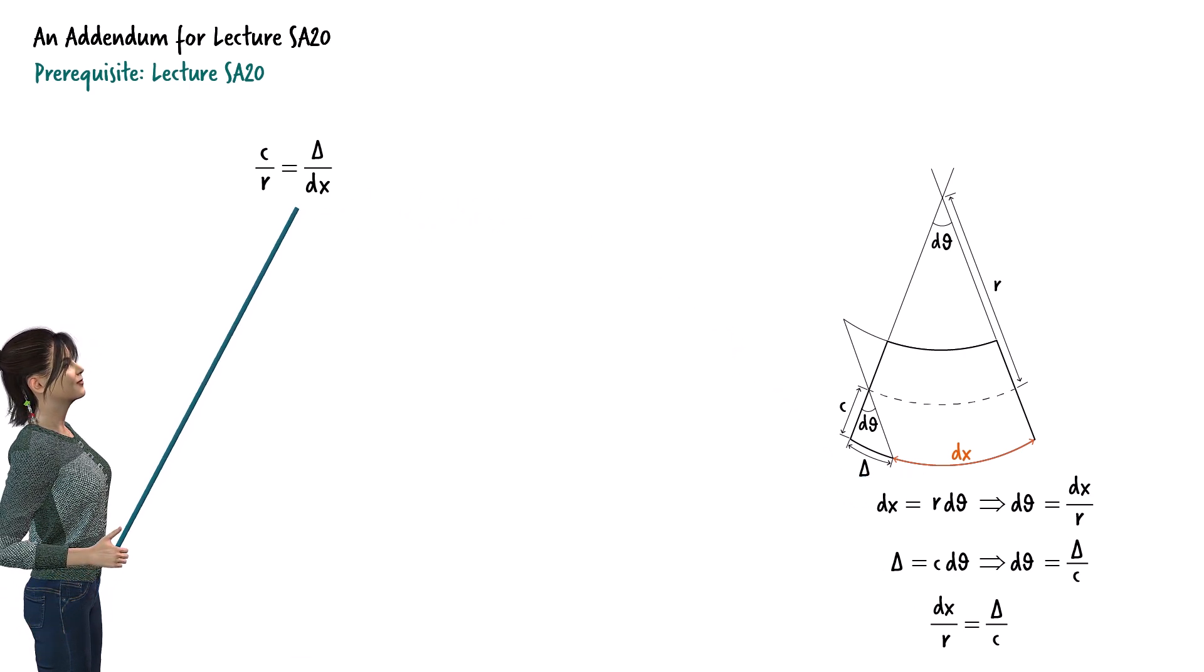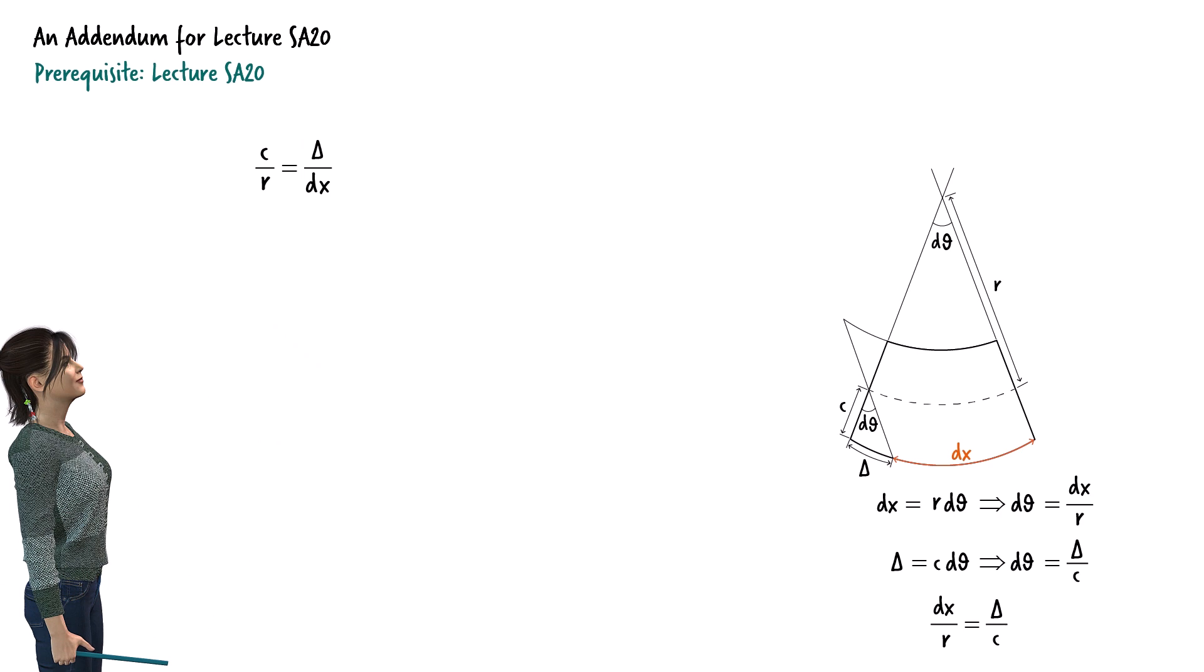Here we can see that the member has elongated by delta. So, this term, delta over dx, is the axial strain at the bottom fiber of the beam segment. Let's refer to it as epsilon max.